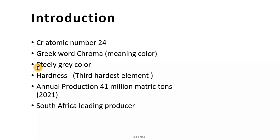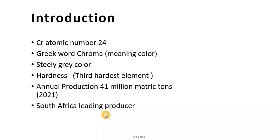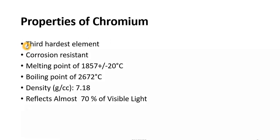Chromium is a steely gray, hard and brittle metal. It is the third hardest element after carbon and boron. The annual production of chromium is 41 million metric tons as of 2021, and South Africa is the largest chromium producer. Chromium also has a property of corrosion resistance.